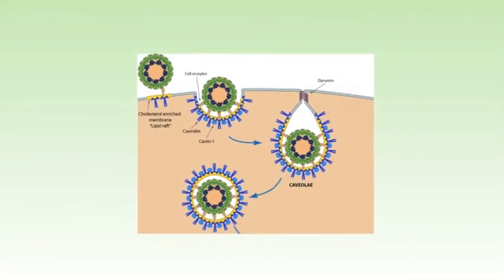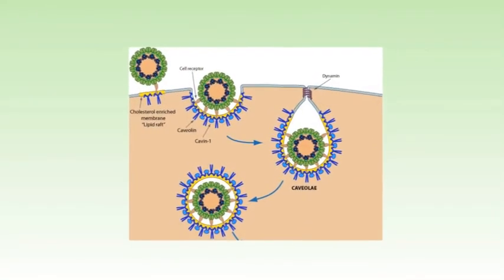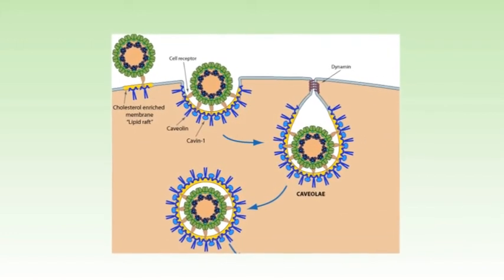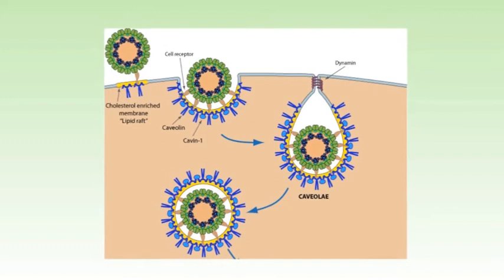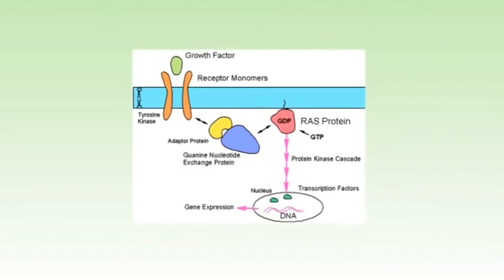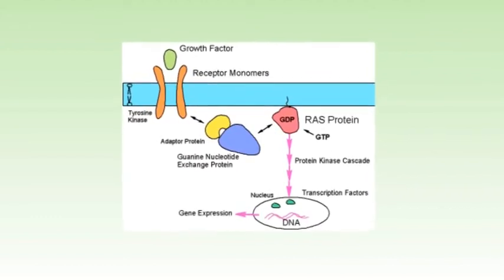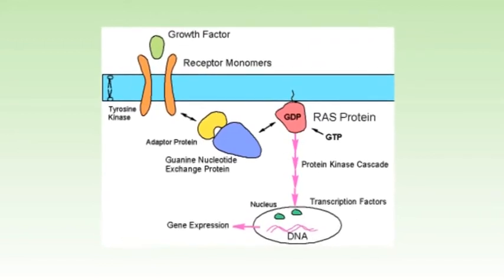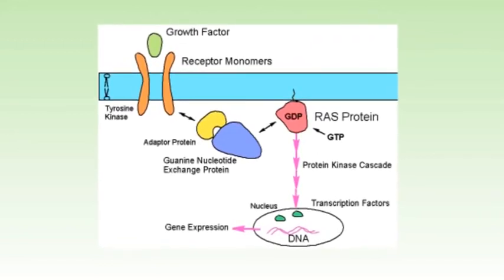Caveolae are implicated in a variety of cellular functions, including membrane trafficking within cells and the transduction of external signals into cellular responses. The receptors for insulin and other growth factors, as well as certain GTP-binding proteins and protein kinases associated with transmembrane signaling, appear to be localized in rafts and perhaps in caveolae.